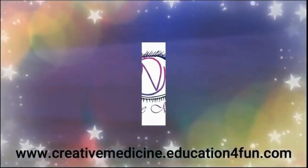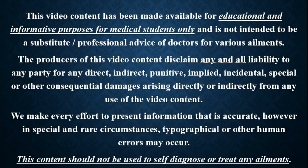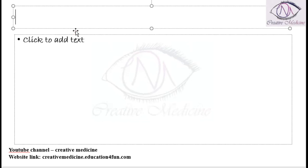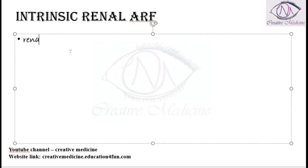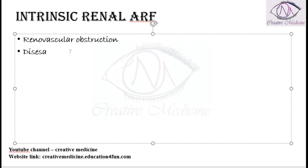Hello friends, welcome to Creative Medicine. In this lecture we will learn about intrinsic renal acute renal failure. In intrinsic renal acute renal failure, the problem is in the kidney itself. The first cause is renal vascular obstruction. There can also be diseases of the glomeruli or diseases of the renal microvasculature.